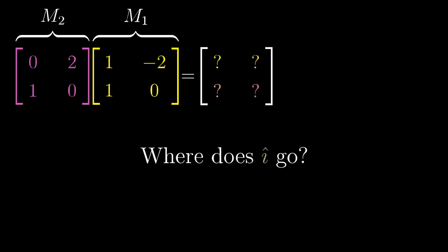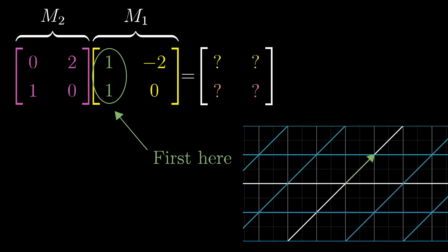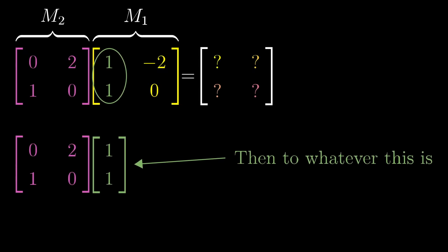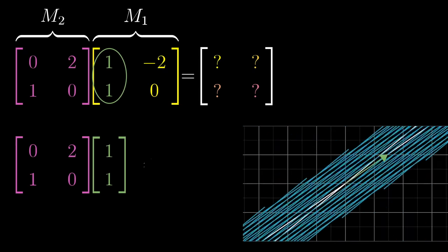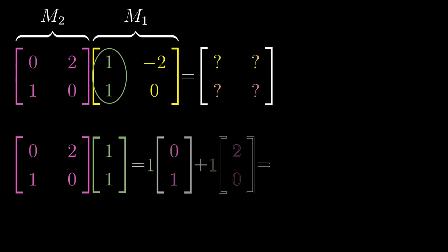First, we need to figure out where i hat goes. After applying M1, the new coordinates of i hat, by definition, are given by that first column of M1, namely 1,1. To see what happens after applying M2, multiply the matrix for M2 by that vector 1,1. Working it out the way that I described last video, you'll get the vector 2,5.